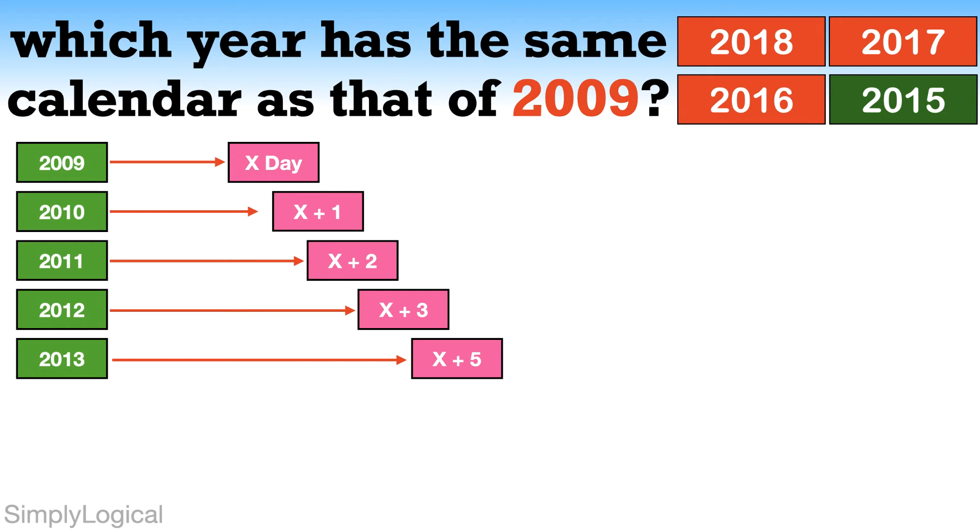Again, it means the first day of 2014 will be X plus 6 day, as there is one odd day in one ordinary year 2013.